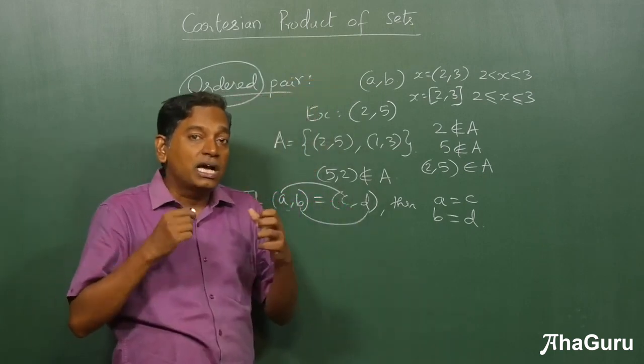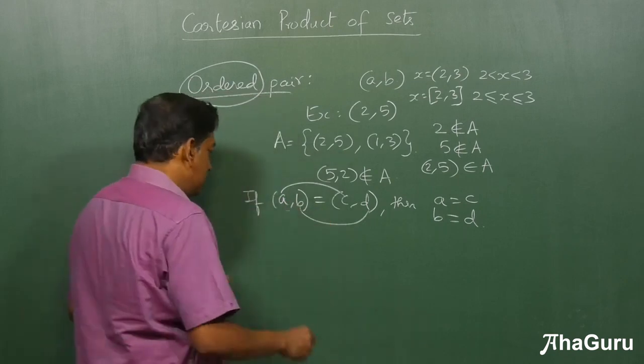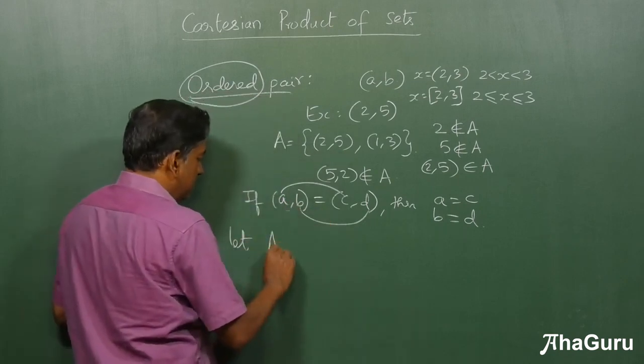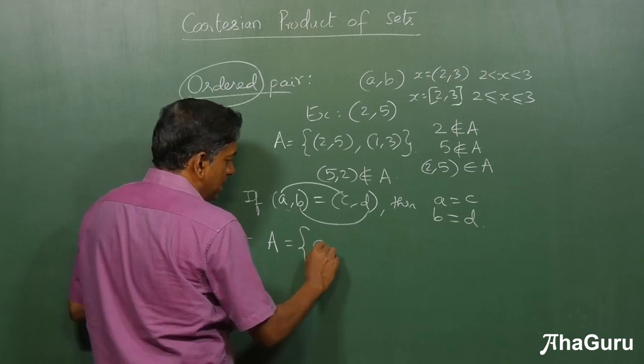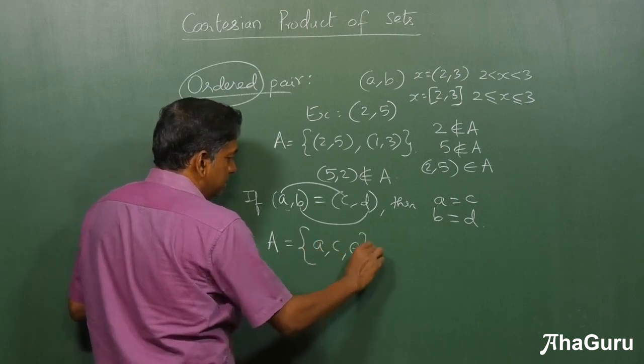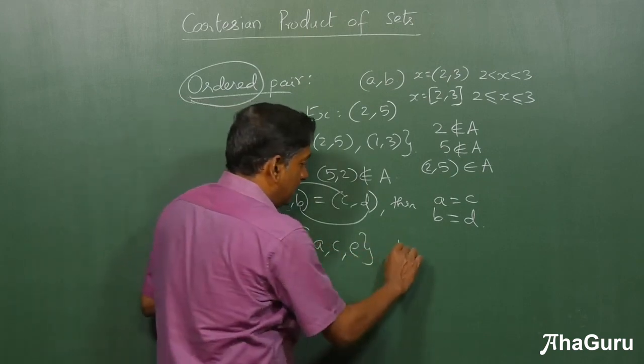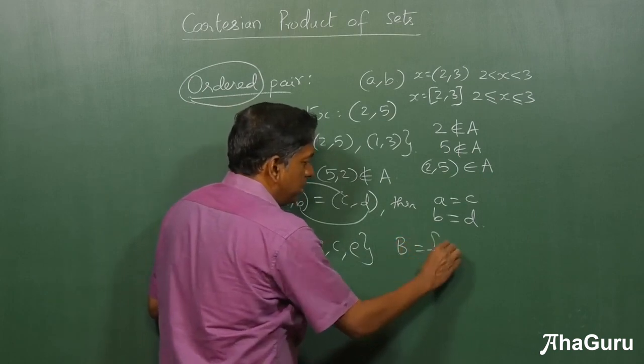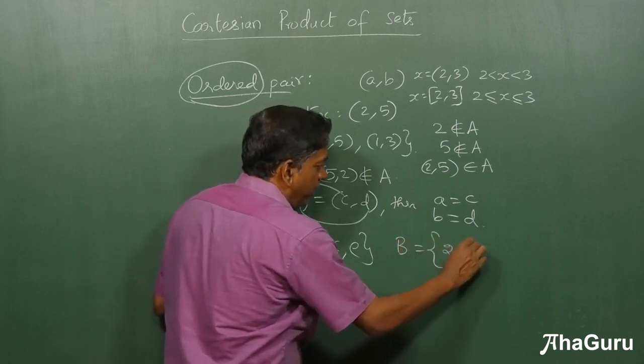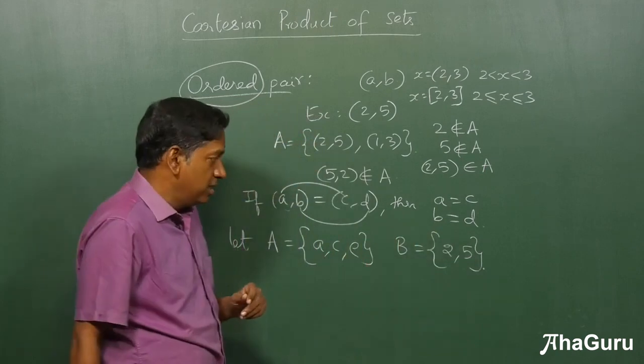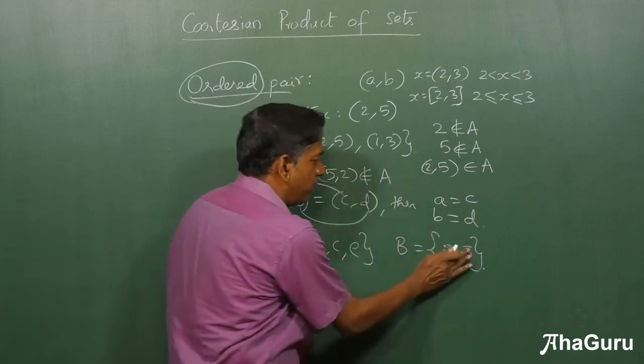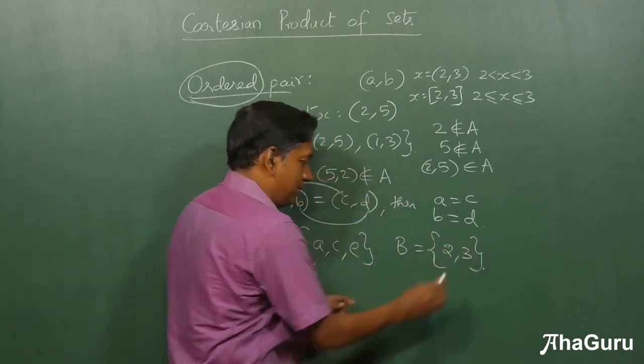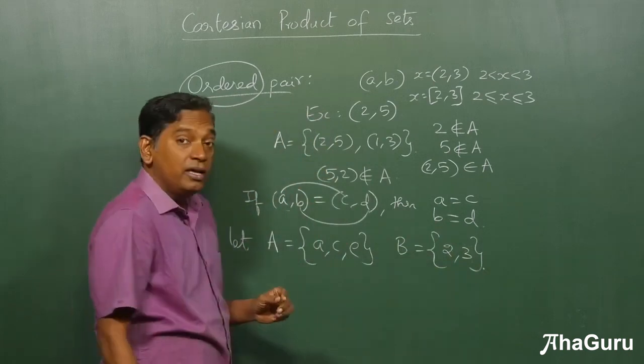What is the Cartesian product? Suppose I say, let set A is a, c, e, and let's set B be 2, 3. I used 2 comma 5 here, so let me just use 2 comma 3, just to make it different.